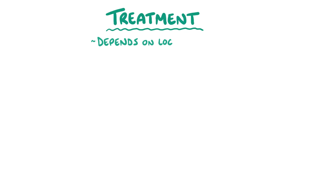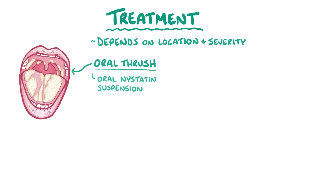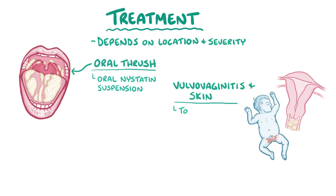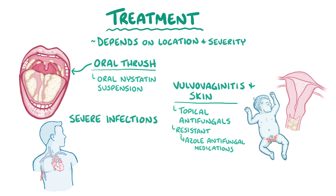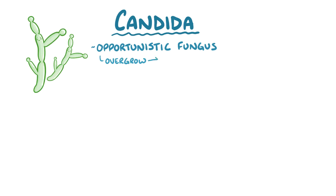Treatment of candidiasis depends on the location and severity of the infection. Oral thrush is treated with oral nystatin suspension, whereas vulvovaginitis and skin infections are treated with topical antifungals. Resistant infections are often treated with azole antifungal medications. In severe infections, especially when there's a prosthetic device like a catheter or a ventricular shunt infected with a biofilm, it's often necessary to remove the device. Severe infections are often treated with a medication like amphotericin, azole antifungals, or echinocandins like micafungin. Candida is an opportunistic fungus that can overgrow in situations where there are fewer competitive microorganisms or a weakened immune system.